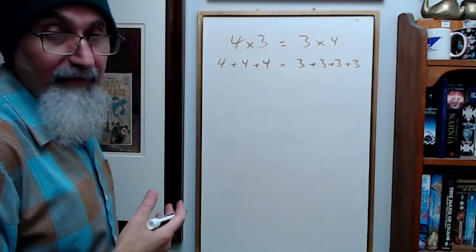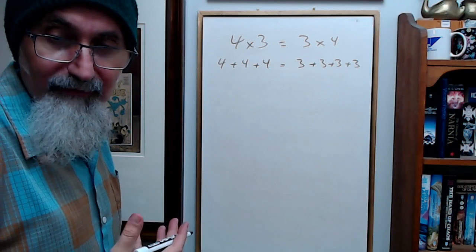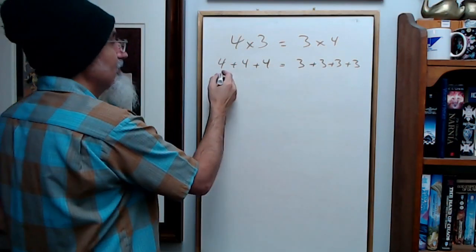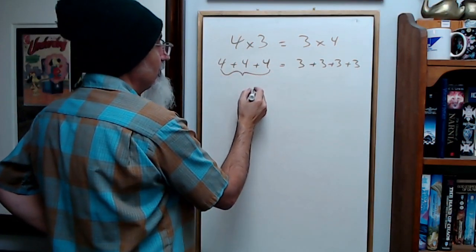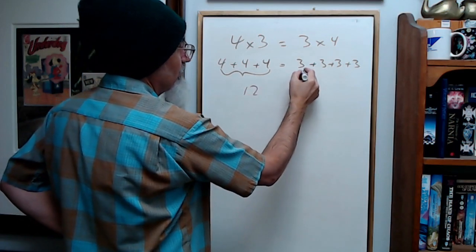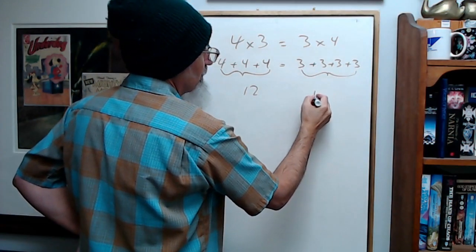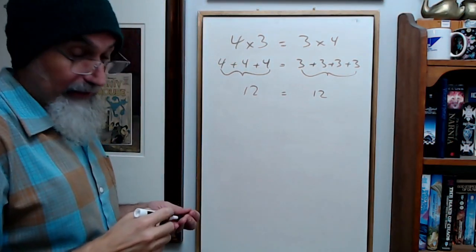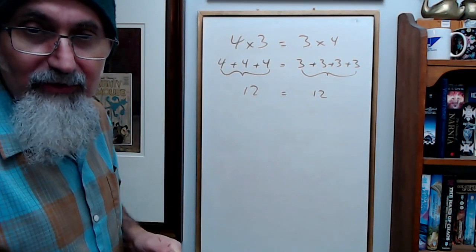Now what's the proof of this? I don't know what the official proof is, but if you add these up—if you do the addition—this is equal to 12. And if you add these up, this is equal to 12. So 12 equals 12.